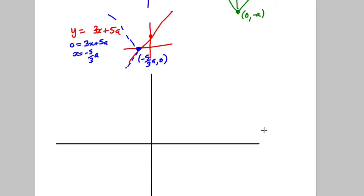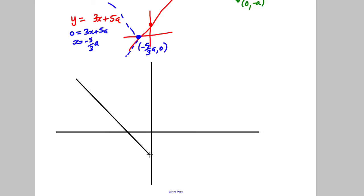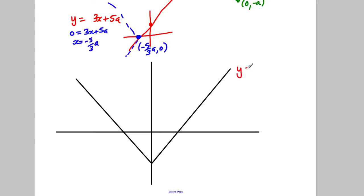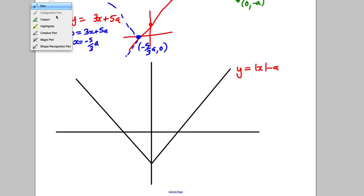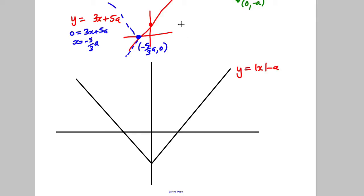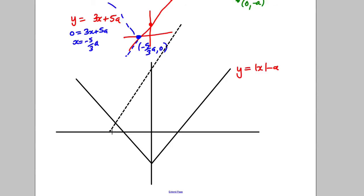Here are our axes. We go down to negative a for y equals the modulus of x take away a. The other graph, y equals the modulus of 3x add 5a, has a much steeper gradient. It comes down to negative 5a/3 on the x-axis and then goes back up.